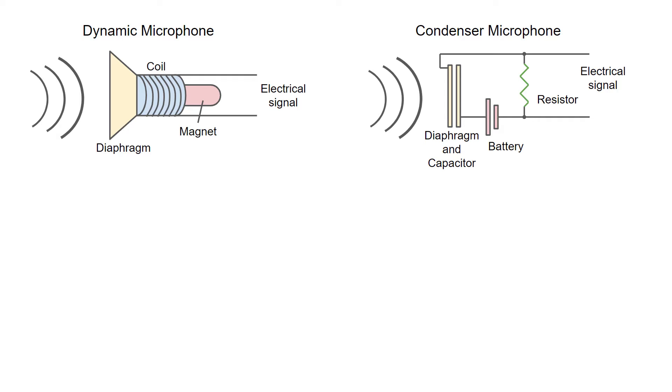In a condenser microphone, the moving diaphragm changes the distance between the plates of a capacitor, causing a change in the electrical field, which produces a changing electrical signal. The voltage of these electrical signals can be sampled at periodic intervals to create a digital audio recording.